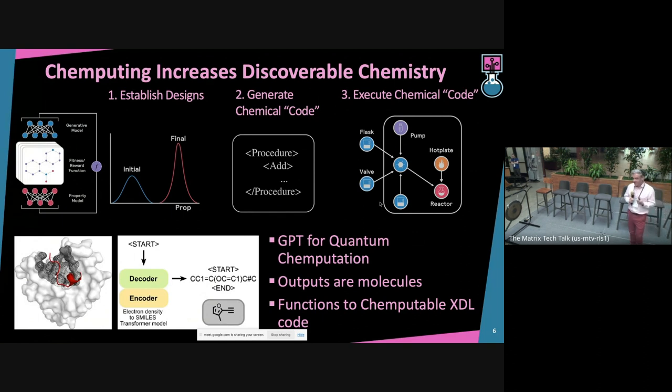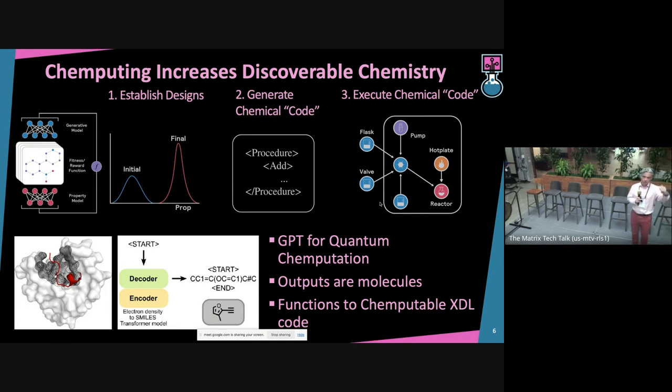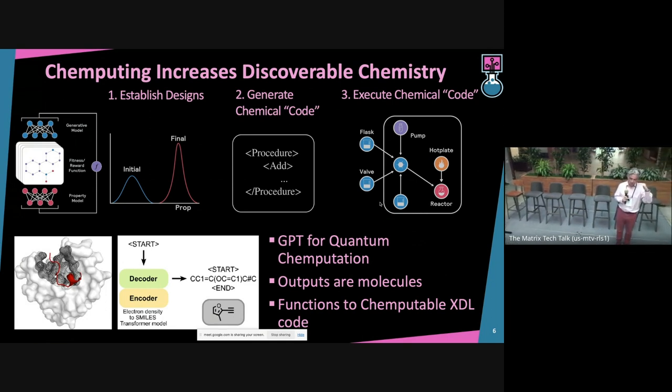The way you do that is you establish a design, you then generate the code almost randomly, like writing on a typewriter randomly, and then try and execute it. If you did that for real, your lab would be on fire. So what you try and do is you go through imaginary space, and you think about what might work.